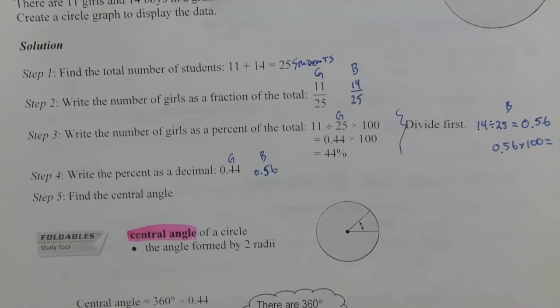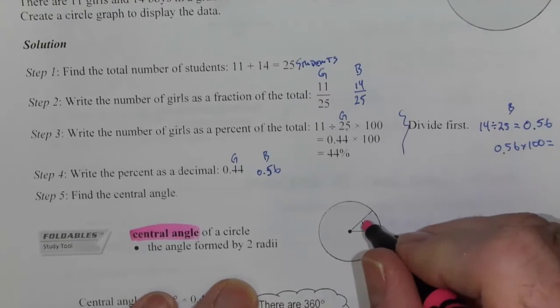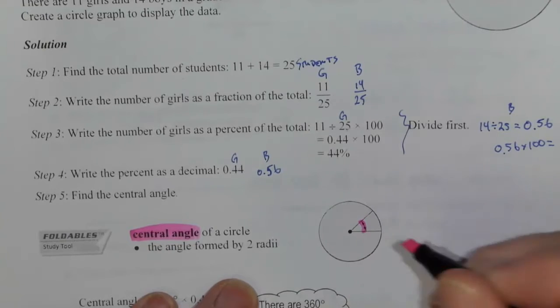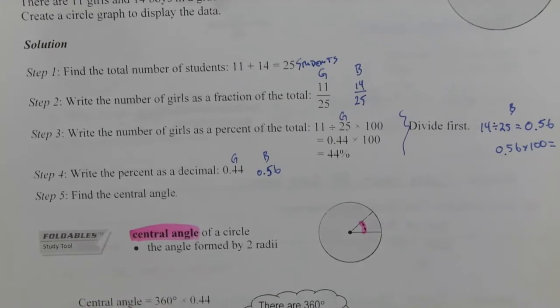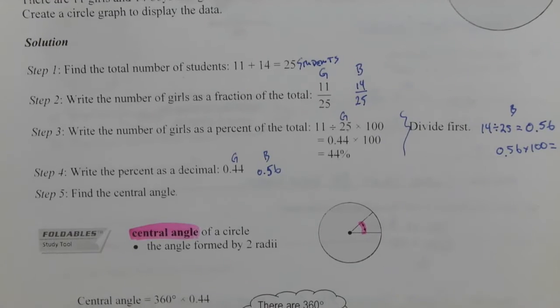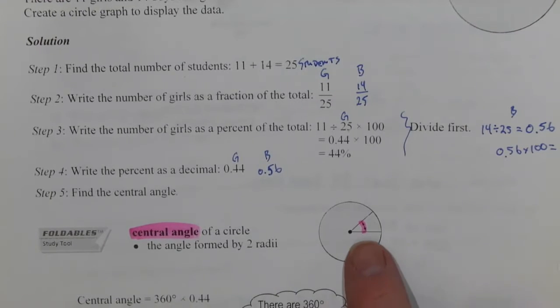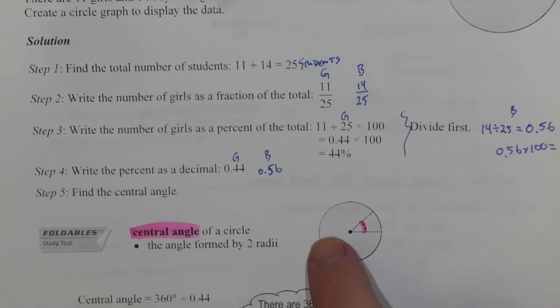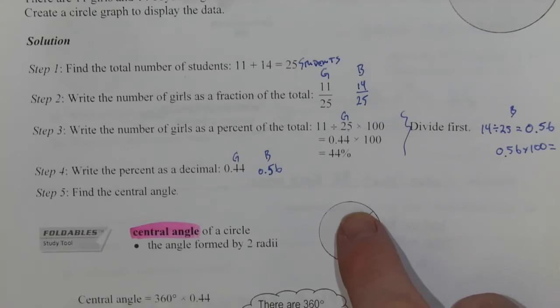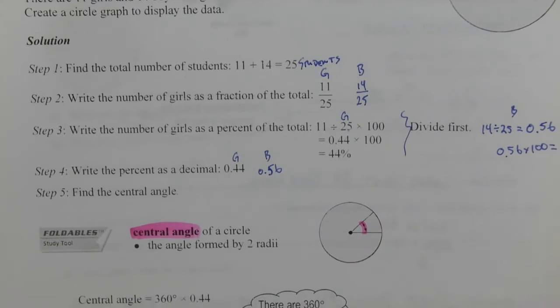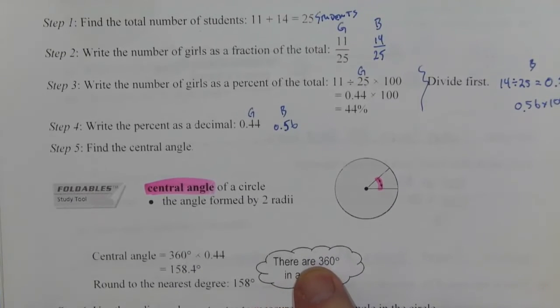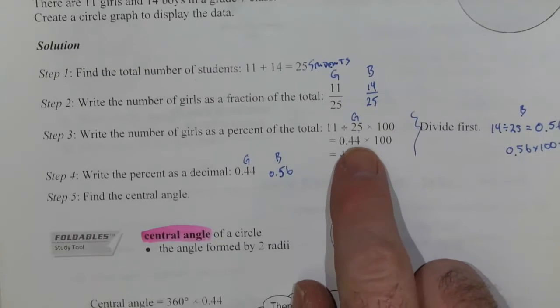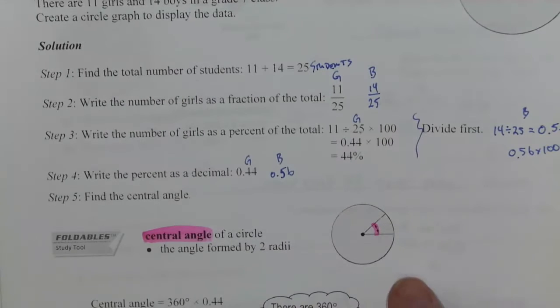The central angle is the angle that's formed by those two radii. So this angle right there is a central angle. Now a fact about circles is that there's 360 degrees all the way around once in a circle. So that's going to become important. Now if we're trying to calculate 44 percent of the circle.